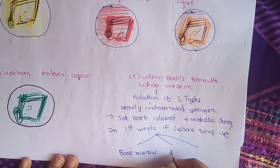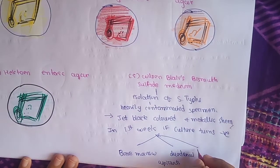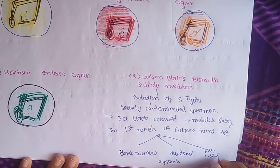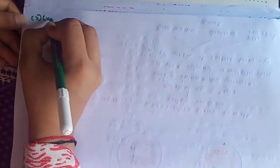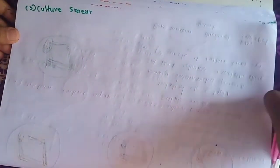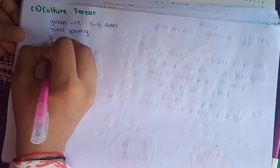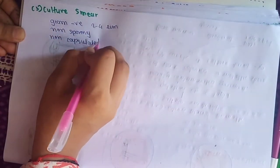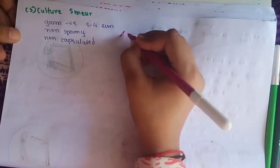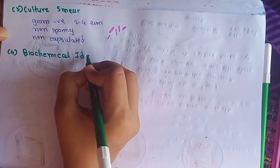If in the first week of illness all cultures turn negative, we will take specimens of bone marrow, duodenal aspirate, and also pus or skin scrapings of rose spots. For culture smear microscopy, since Salmonella typhi is gram-negative, non-sporing, non-capsulated, and motile, it will appear as a gram-negative rod.